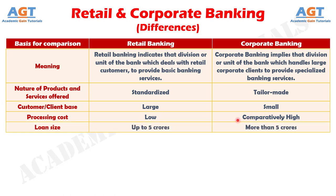Number 5: With Retail Banking, one can avail a loan up to 5 crore rupees only, depending on factors like credit score, history, etc. Whereas with Corporate Banking, the entities can apply for a loan of more than 5 crore rupees.